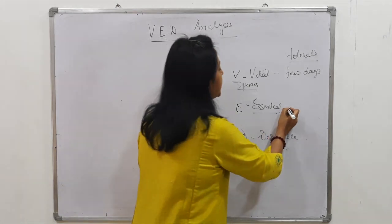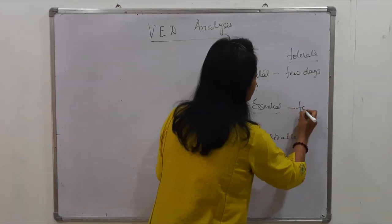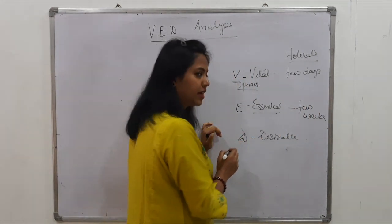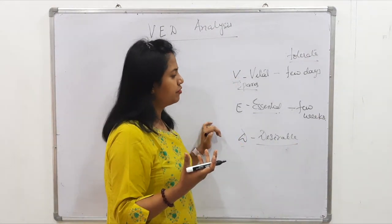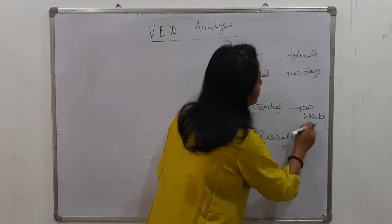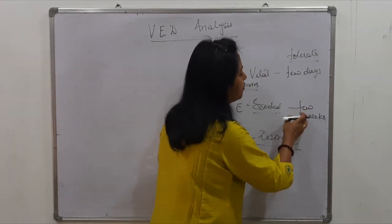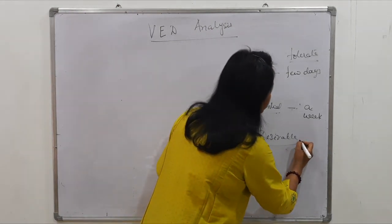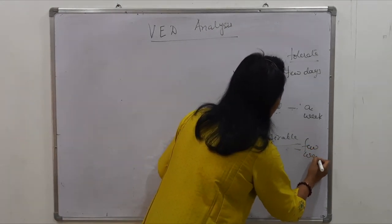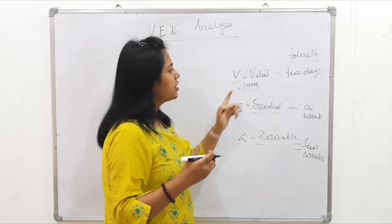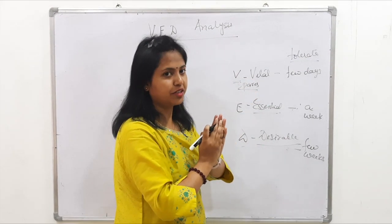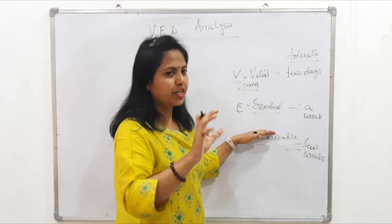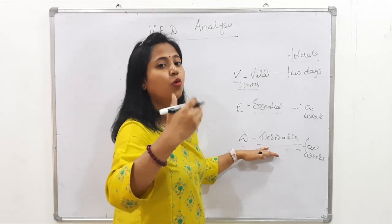Essential materials are also important, but if they are missing for a few weeks we can tolerate — but more than a few weeks it will be difficult. Desirable materials have an even longer tolerance — stock-out for a week or so can be tolerated. So the key difference is: vital has a very short tolerance period, essential has a relatively longer period, and desirable can be tolerated for much longer compared to essential and vital.